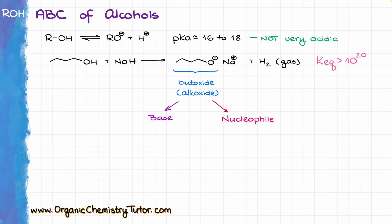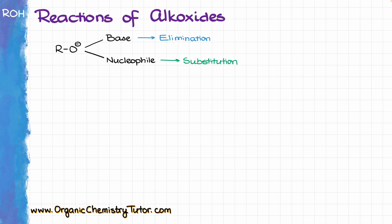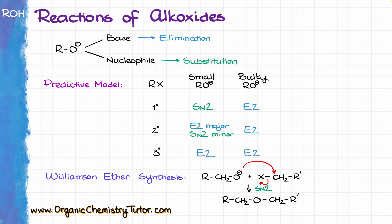Once our alcohol is deprotonated, we form the alkoxide anion. Alkoxides are both decent bases and strong nucleophiles, and alkoxide nucleophilicity is inversely correlated with its size — the bulkier the alkoxide, the less nucleophilic it is. Generally, a non-bulky alkoxide will act as a nucleophile with a primary alkyl halide yielding a substitution product, and as a base with secondary or tertiary alkyl halides yielding the corresponding alkenes. A very bulky alkoxide like tert-butoxide will act as a base regardless of the alkyl halide structure. The reaction between an alkoxide and a primary alkyl halide is known as Williamson ether synthesis.